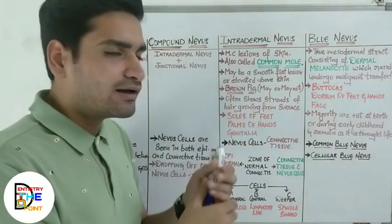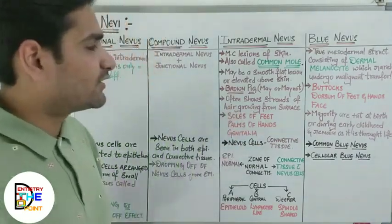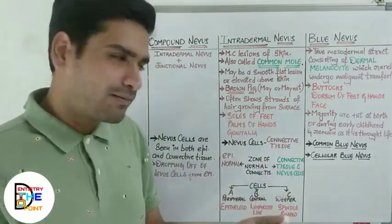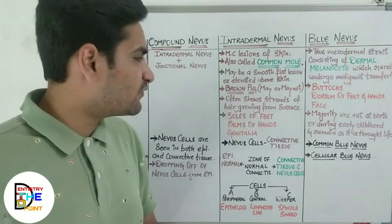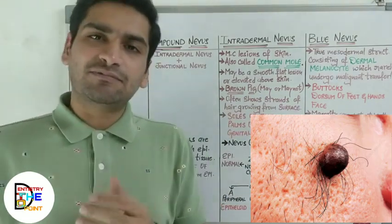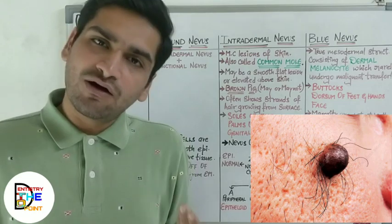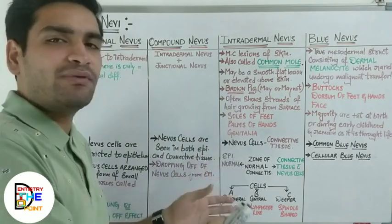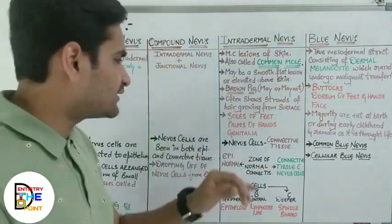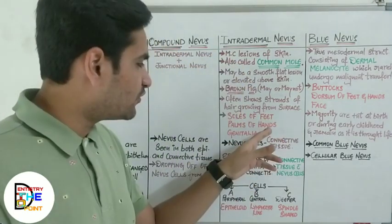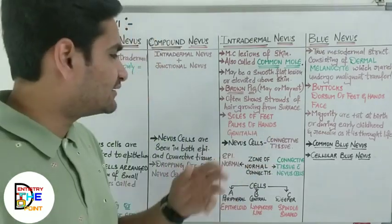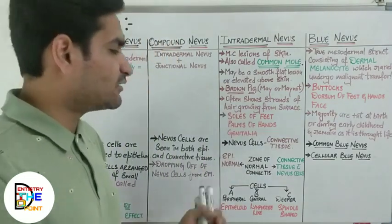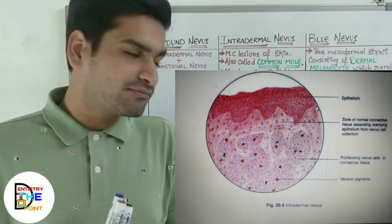It is brown in pigmentation, though brown coloring may or may not always be present. It often shows strands of hair growing from the surface. The most common areas for intradermal nevus are the soles of feet, palms of hands, and genital areas. These are the three most common sites.